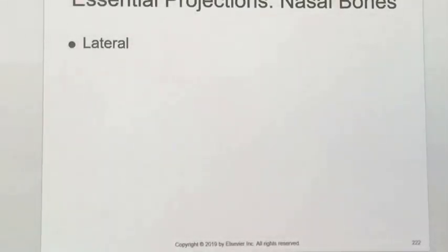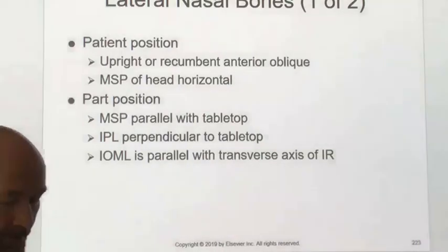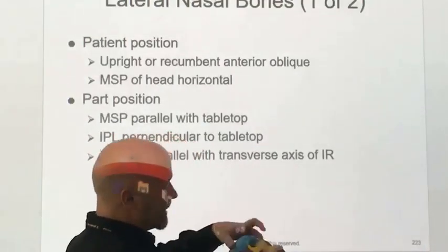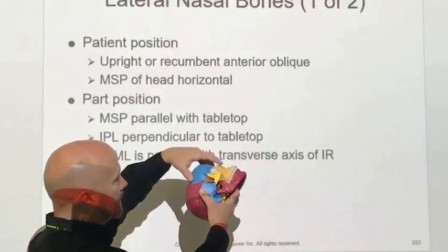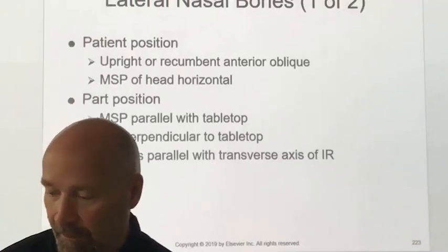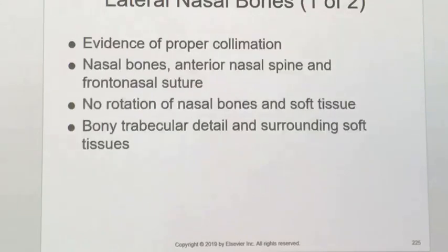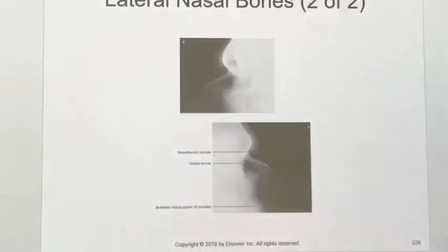Nasal bone laterals are pretty straightforward. You have to shoot both — left lateral and right lateral. Shoot them tabletop with positioning just like any other lateral, but your central ray location is just distal to the nasion. Your collimated field is about the size of a quarter — very small. Don't blast the patient's whole head just for lateral nasal bones.